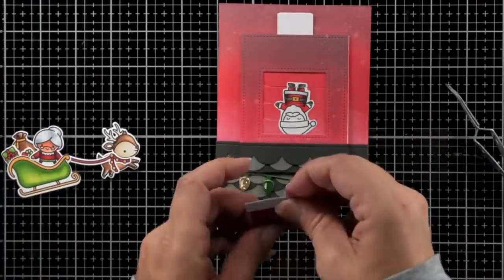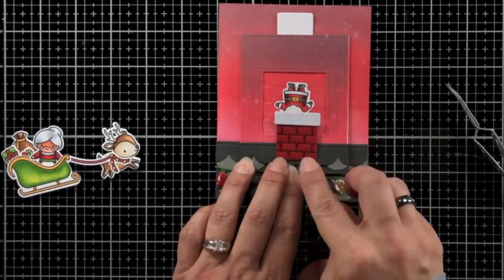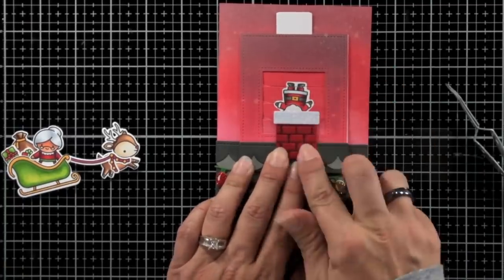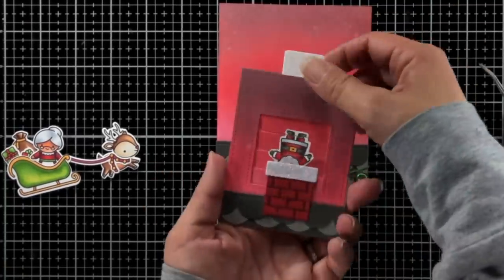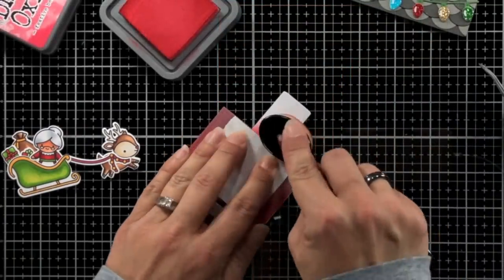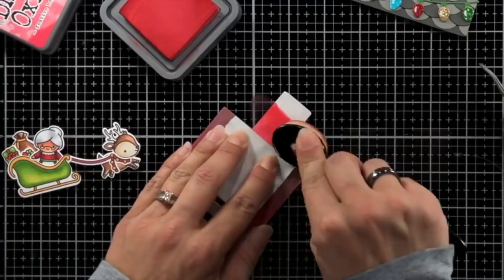I had already went ahead and glued my sleigh and my Mrs. Claus in there with the reindeer to kind of save some time. I did already go ahead and put adhesive just at the bottom of my chimney and glued that down.